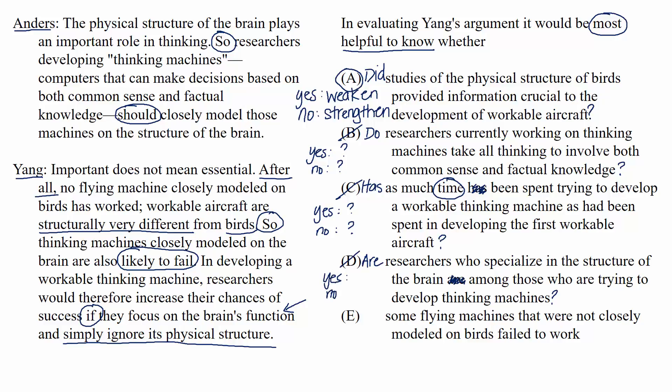Finally, E: some flying machines that were not closely modeled on birds failed to work. As a question: did some flying machines that were not closely modeled on birds fail to work? We don't care about the answer to this either. The issue is with aircraft designs that did work and were not modeled on birds. If some flying machines that weren't modeled on birds failed to work, that's totally irrelevant to this situation.